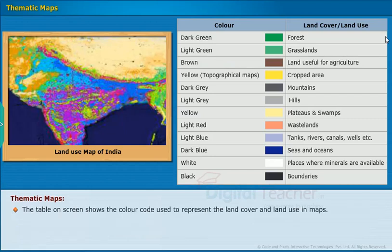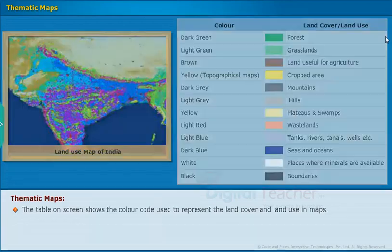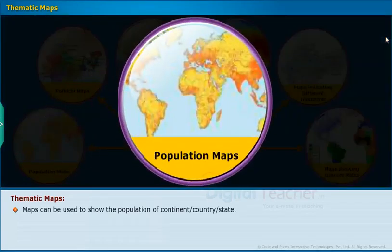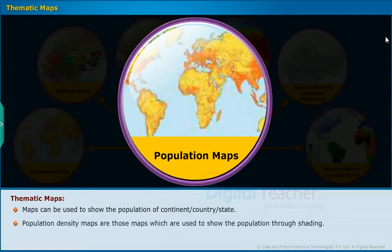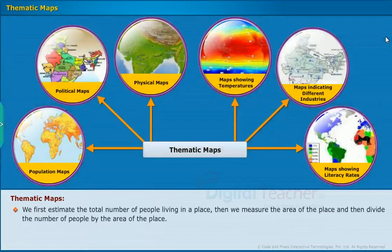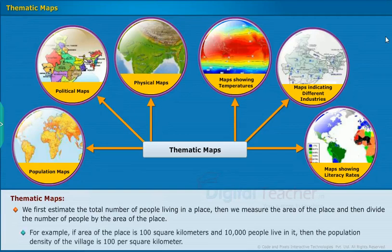The table on screen shows the color code used to represent land cover and land use in maps. Maps can also be used to show the population of a continent, country, or state. Population density maps show population through shading. We first estimate the total number of people living in a place, then measure the area of the place, and divide the number of people by the area. For example, if the area is 100 square kilometers and 10,000 people live in it, then the population density is 100 per square kilometer.